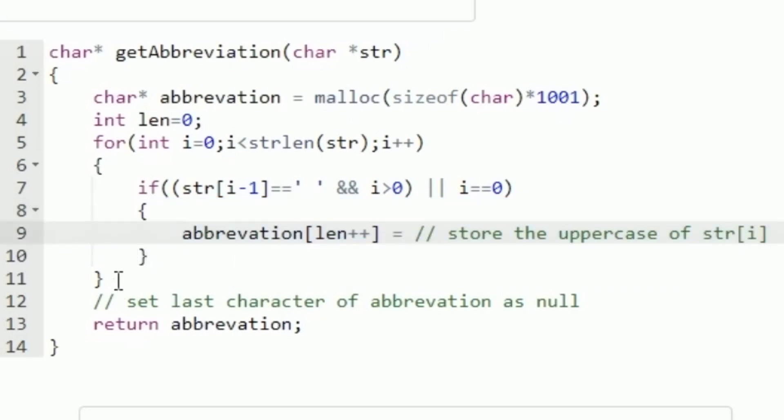After the execution of the loop, all the abbreviation characters will be stored into the character pointer abbreviation. Now we have to set the last character as null, so we say abbreviation[len] equals null. Our output is in abbreviation, so using a return statement we can just return it. This is the logic to solve today's daily challenge.